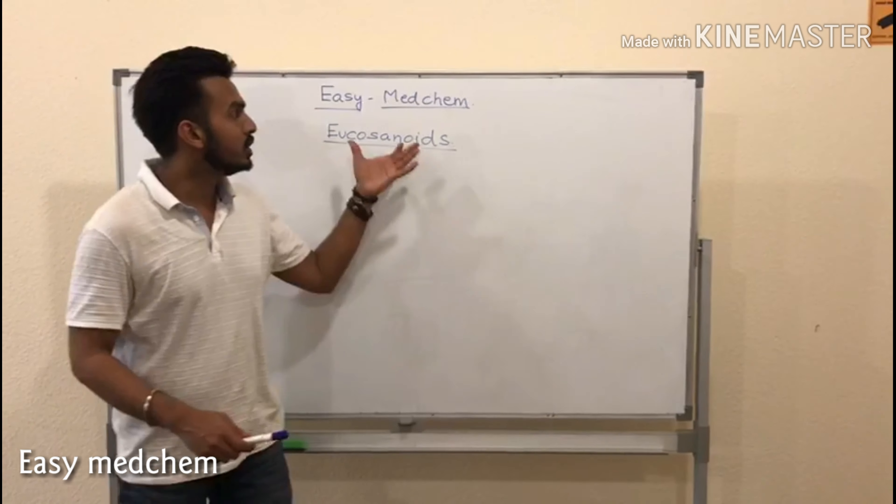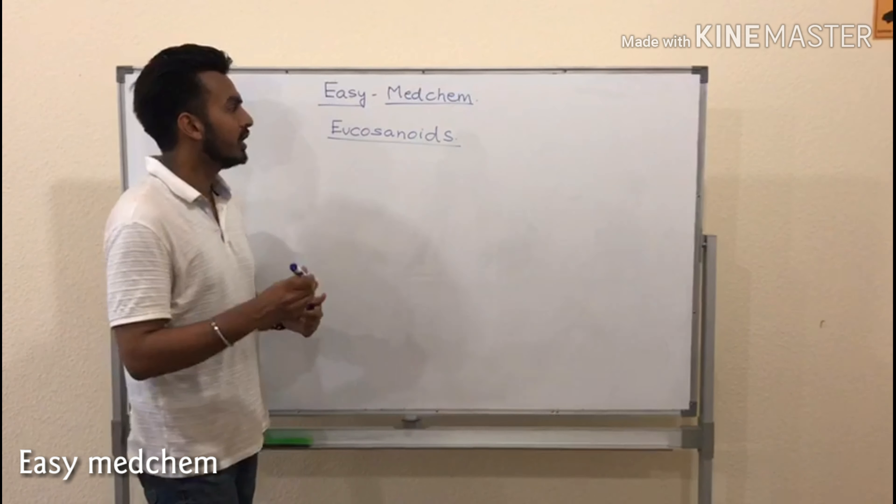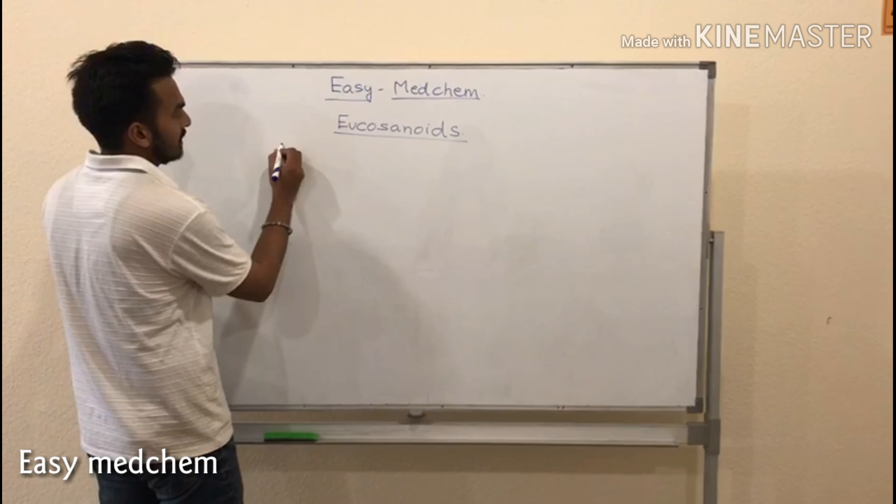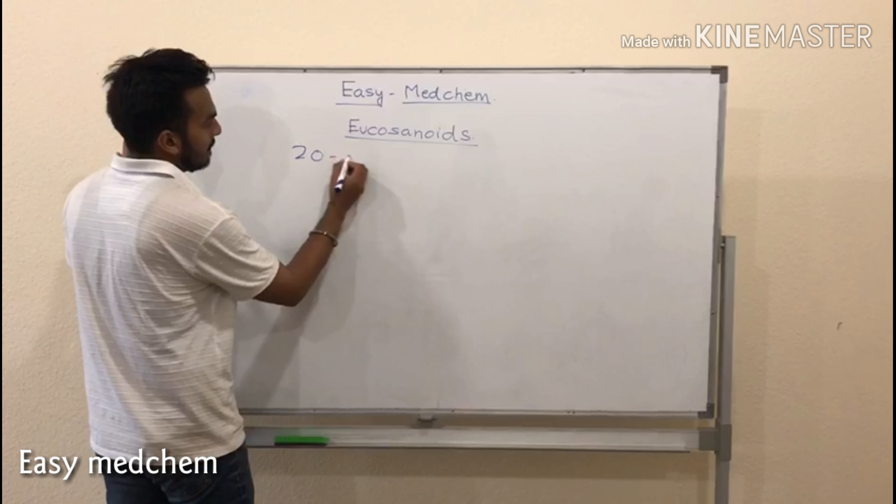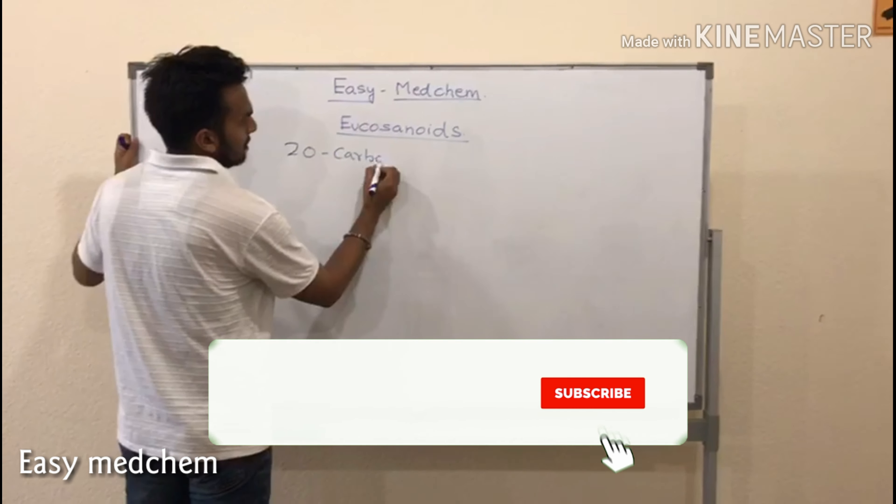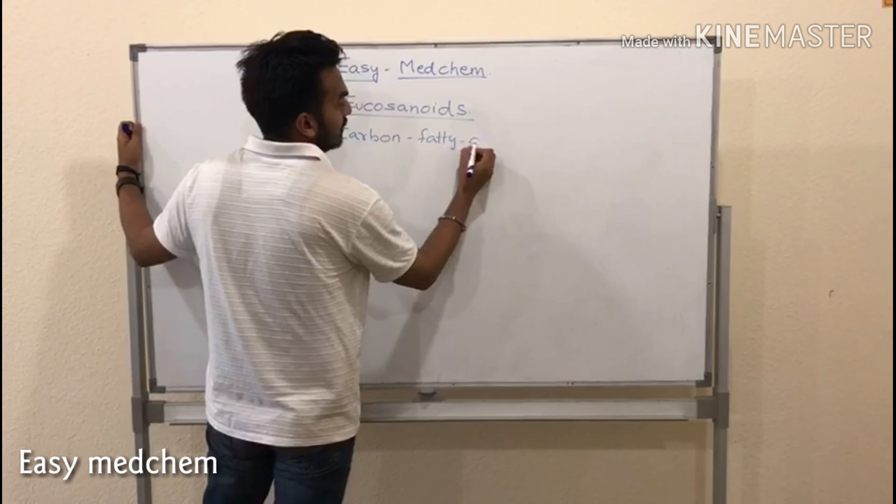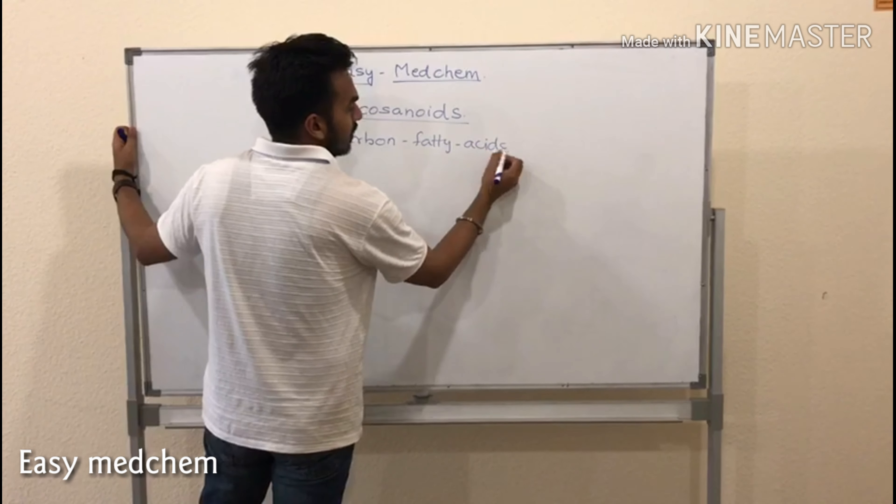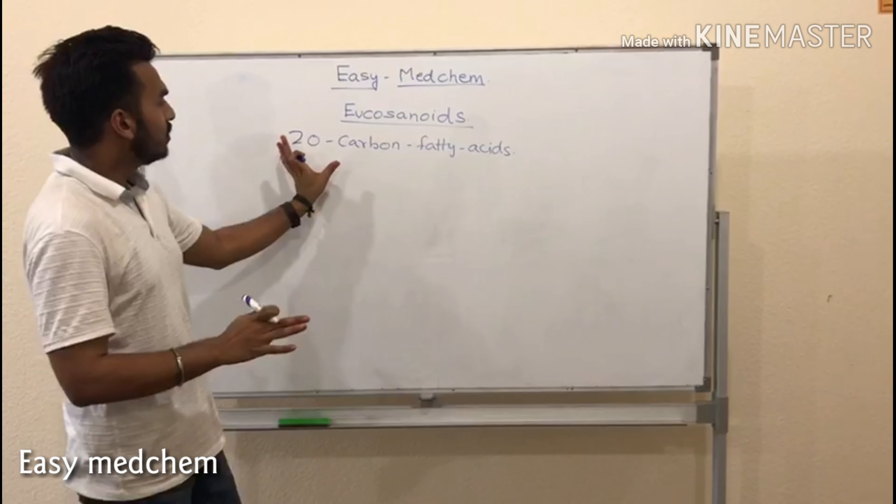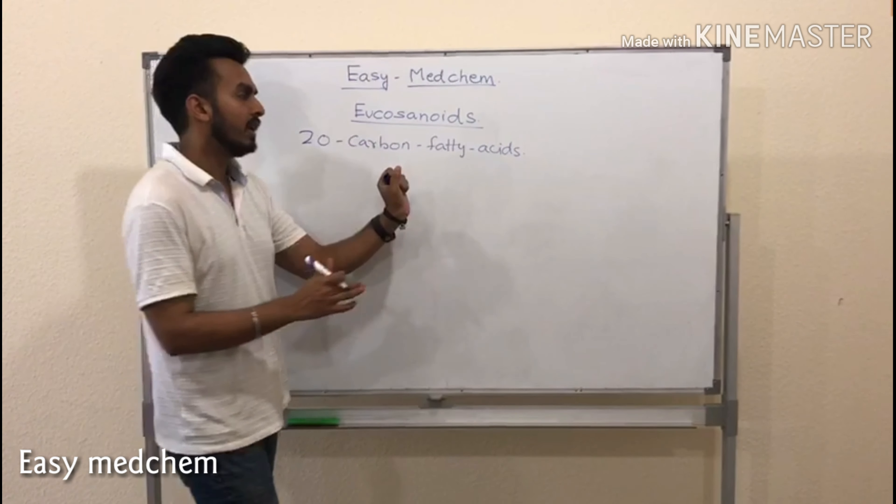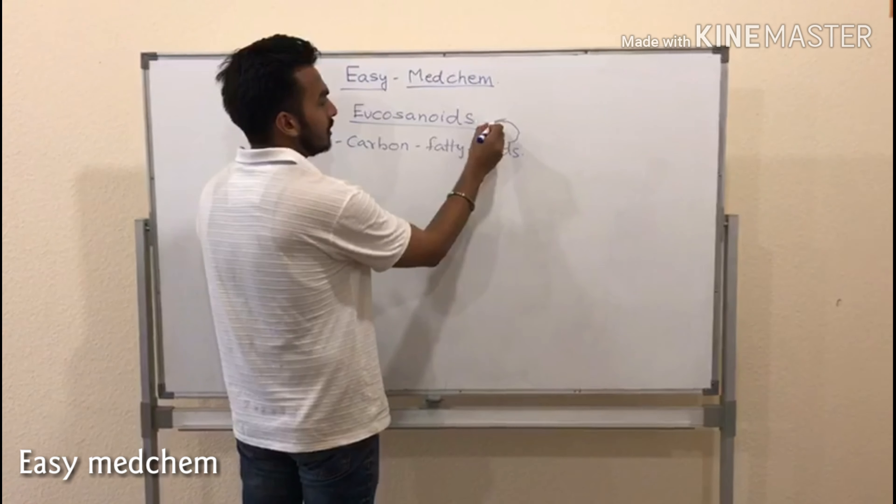So today's part of the video is eicosanoids. The eicosanoids are 20 carbon fatty acids. If you do the oxidation of 20 carbon fatty acids, you will get the eicosanoids.